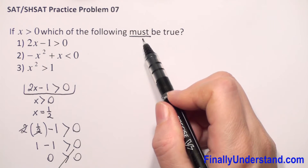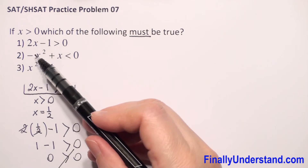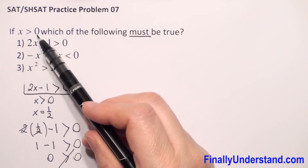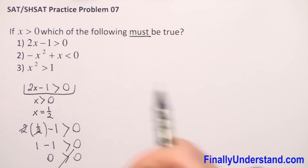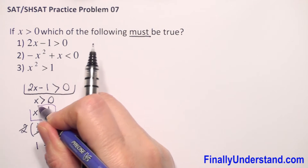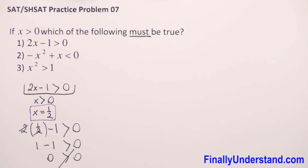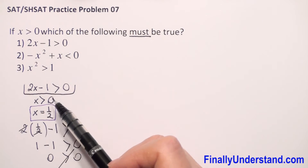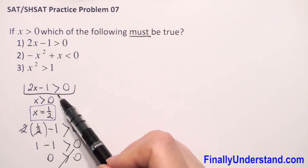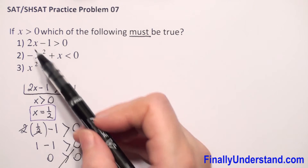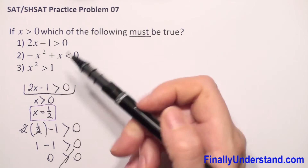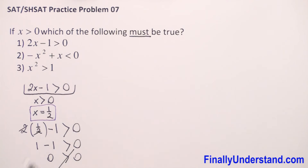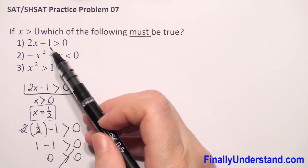Because we have the word 'must,' this inequality should be true for all x greater than 0. But we found one example for which it is not true. It's enough to find only one example — you don't have to look for more. When you find one that shows the inequality is not true, that's the end. So the first inequality is not true.